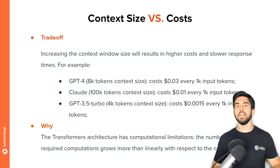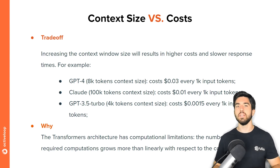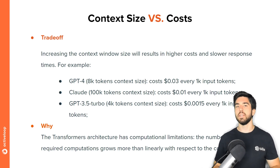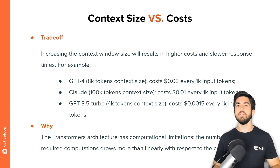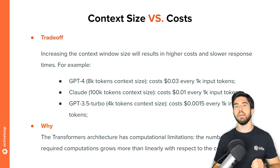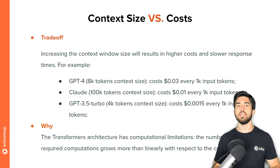Moreover, using the standard transformer architecture — the specific neural network type used in many foundation models — the number of computations increases more than linearly with respect to the context size, thus becoming soon unmanageable with greater context sizes. The problem is not yet completely solved, but faster implementations of transformers are now available, allowing for the context sizes we see today.